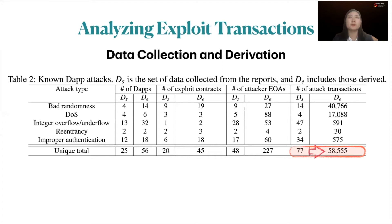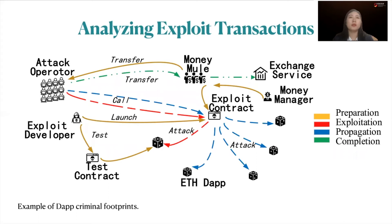Before presenting the details of our findings, we first summarize the footprint of a typical DApp attack, which consists of four stages: attack preparation, exploitation, attack propagation, and mission completion.